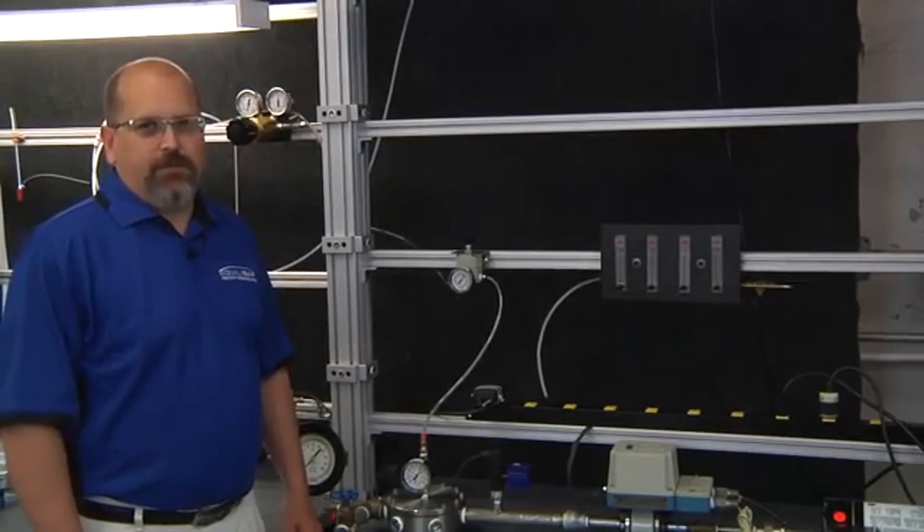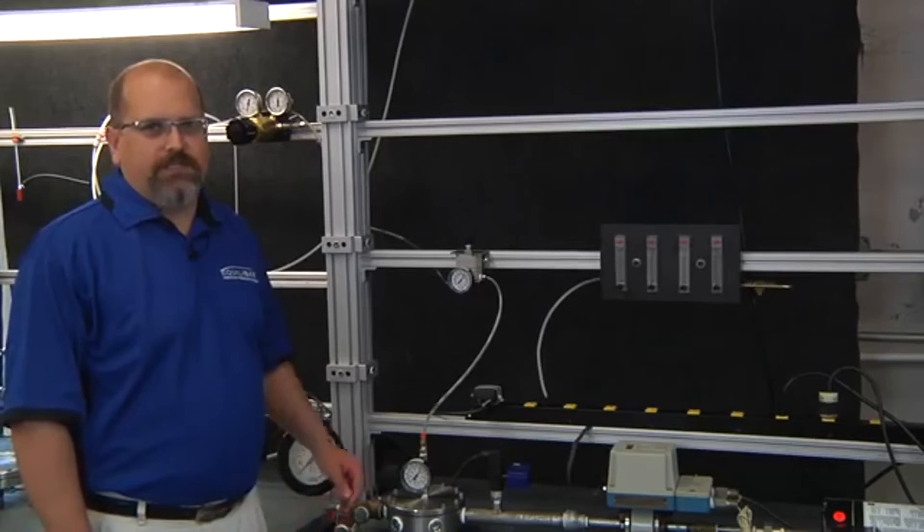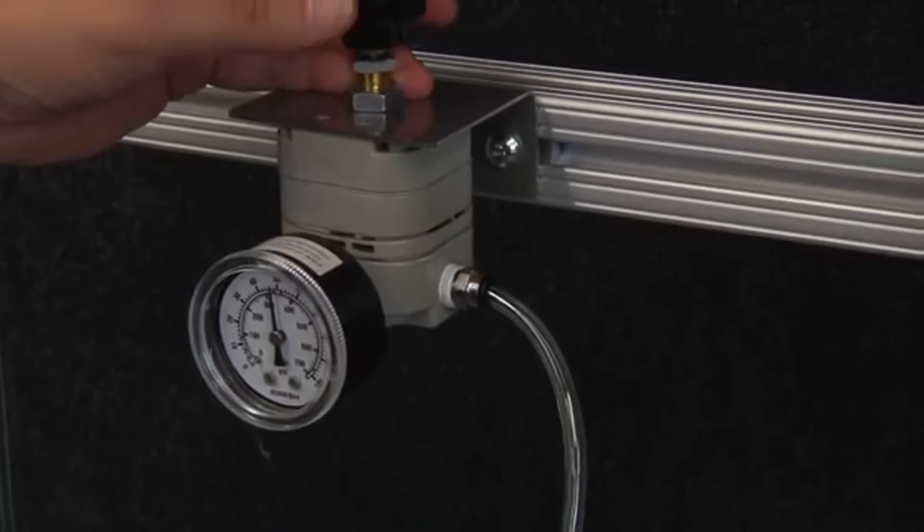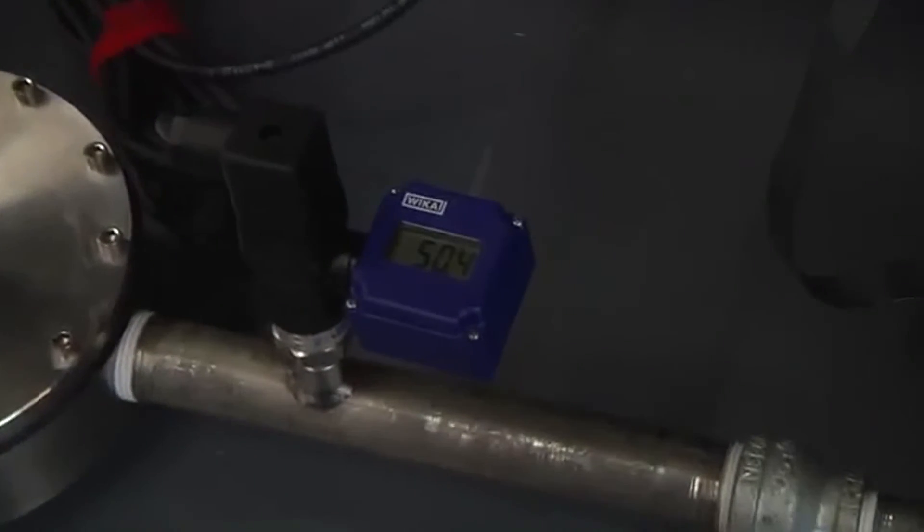What's important is the repeatability of the flow control we can achieve. When I reduce the pressure back to 50 psi, the flow in the system comes right back to 4 gallons per minute through the flow meter.